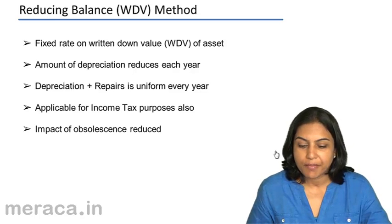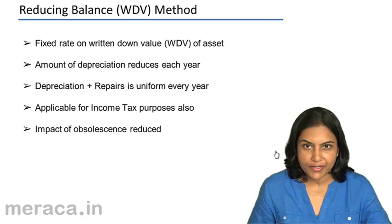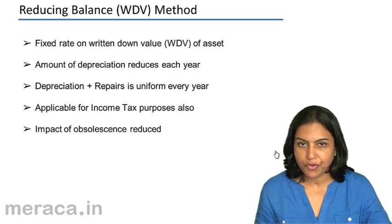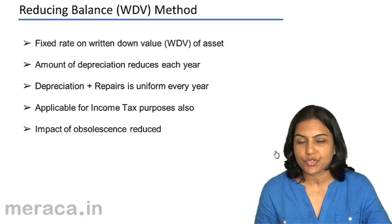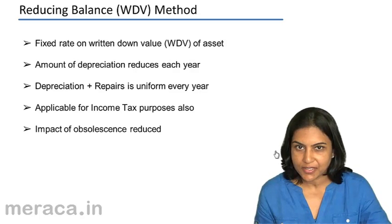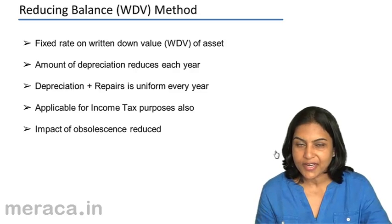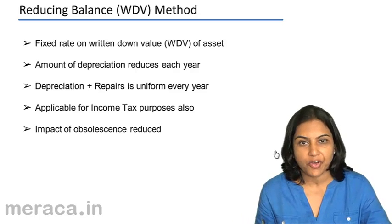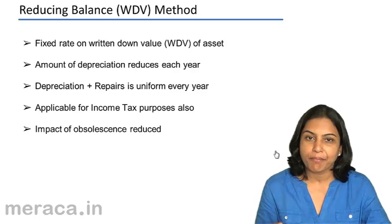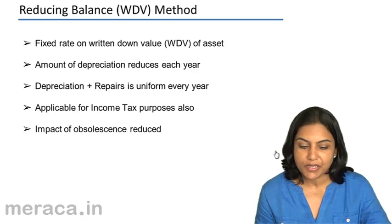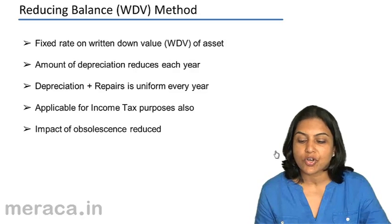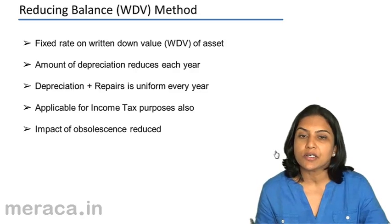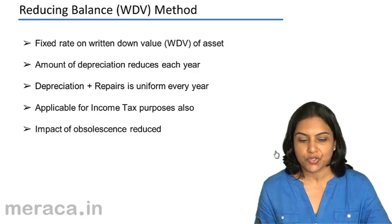Reducing balance method, or written down value method. We discussed the straight line method before, where equal depreciation was charged over the life of the asset. Then we moved on to accounting entries and discussed two methods of recording depreciation. Now we have come back to the methods and are discussing another method called the reducing balance or written down value method. The straight line method and WDV method are the more common methods of charging depreciation.